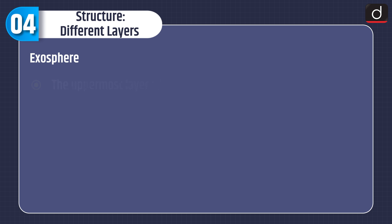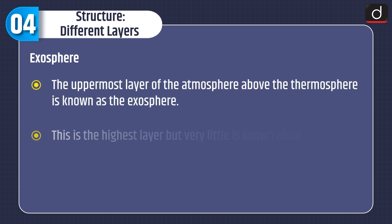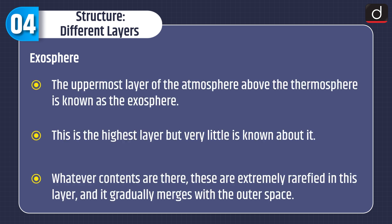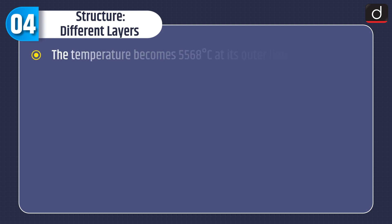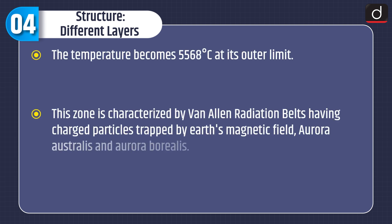The uppermost layer of atmosphere above the thermosphere is known as the exosphere. This is the highest layer but very little is known about it. Its contents are extremely rarefied and it gradually merges with outer space. The temperature becomes 5568°C at its outer limit. This zone is characterized by Van Allen radiation belts having charged particles trapped by earth's magnetic field, aurora australis, and aurora borealis.